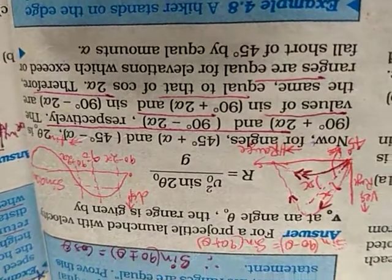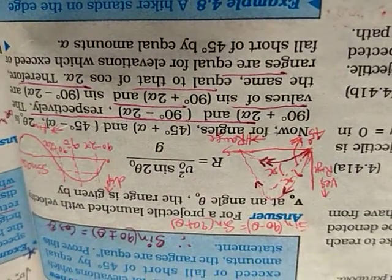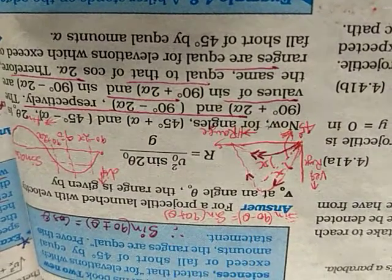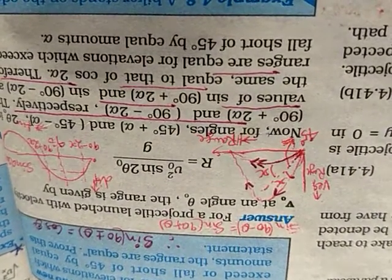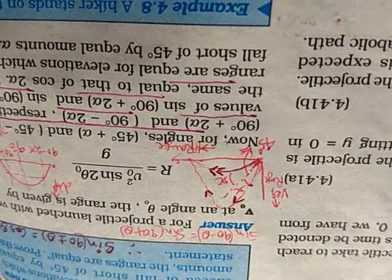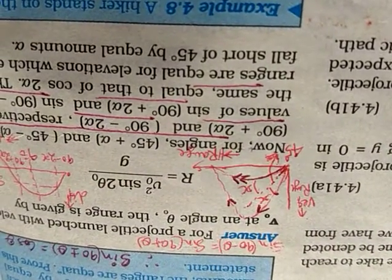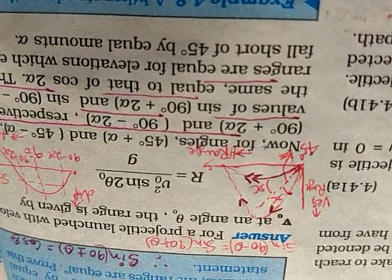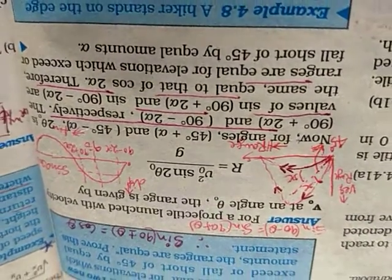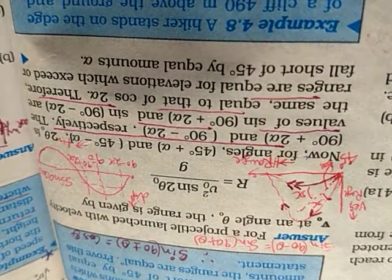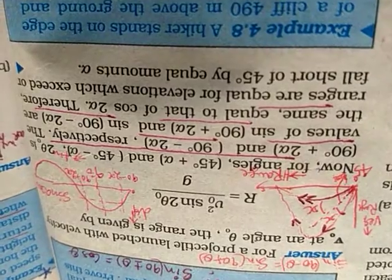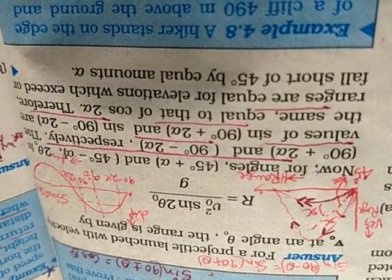because of the fact that when you multiply 45 plus theta within bracket by 2, you get 90 plus 2 theta or 2x, whatever you select. And again, you get for another value 90 minus 2x or 2 alpha. And as a matter of fact, sin 90 plus 2 alpha and sin 90 minus 2 alpha are having the same equal values.